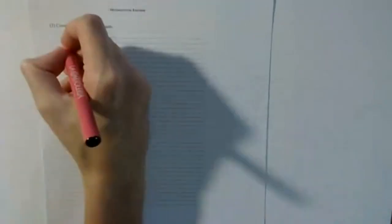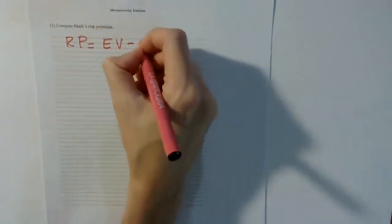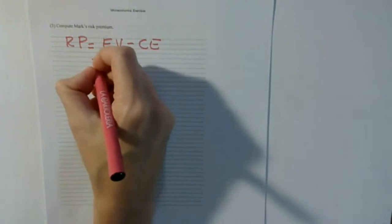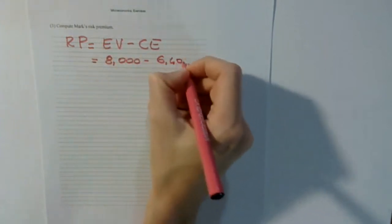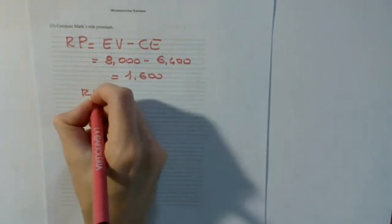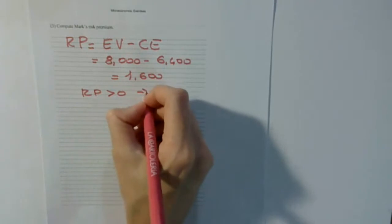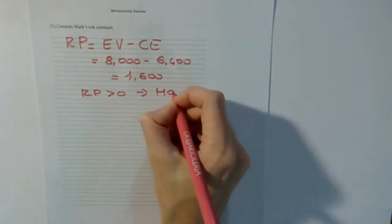Part 3: compute the risk premium. This is straightforward if we've done the previous parts, because the risk premium is the difference between EV and the certainty equivalent. In our case: 8,000 minus 6,400 equals 1,600. The risk premium is positive and greater than zero, which is a further confirmation that Mark is risk-averse.